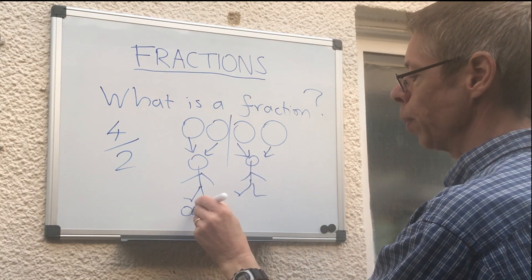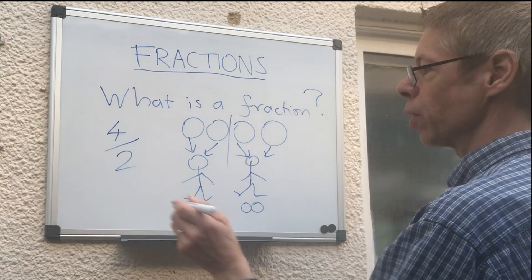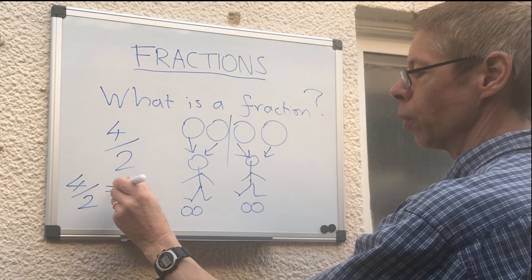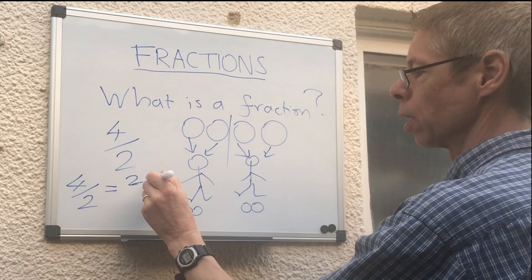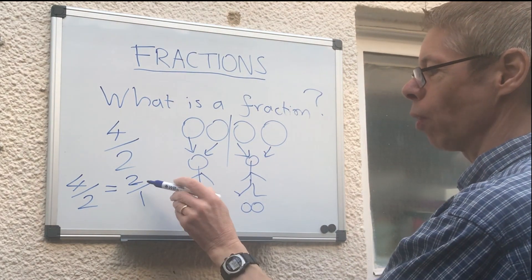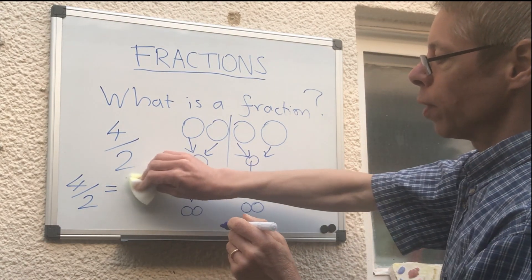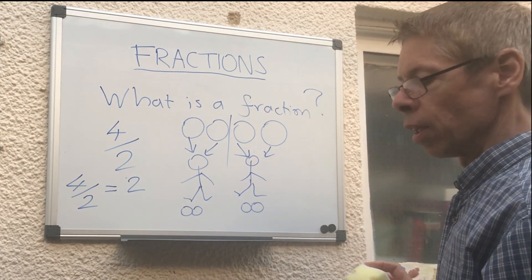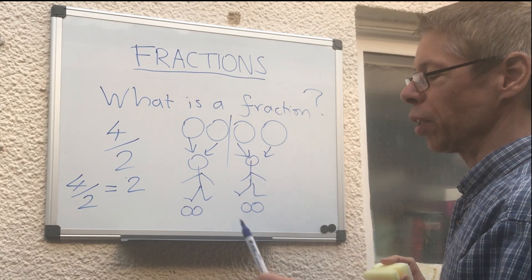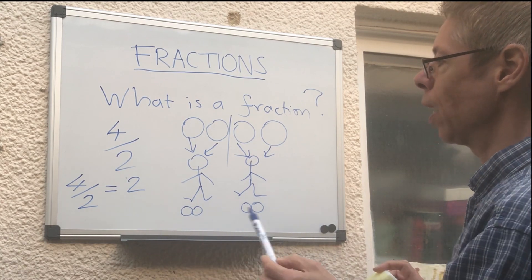So that brings us something interesting. If you have a fraction 4 over 2, that equals 2, for two biscuits for one person. So 2 over 1 is a fraction, but you don't normally write that. In other words, 4 over 2 just equals 2. So when we come on to simplifying fractions, you can see that when you simplify a fraction it may not actually turn out as a fraction, it might turn out as a whole number.